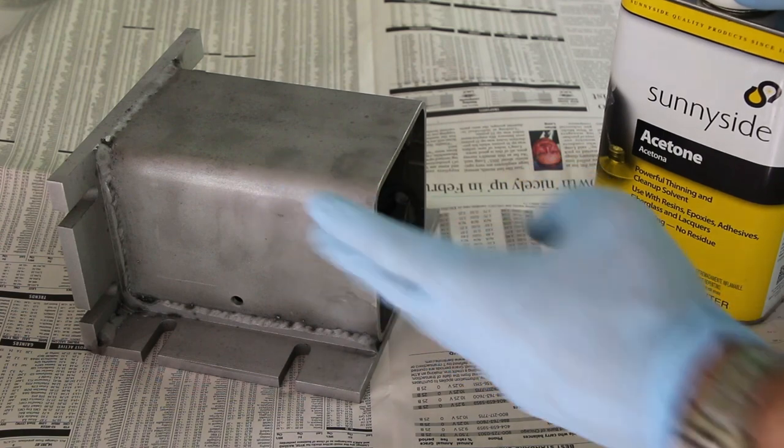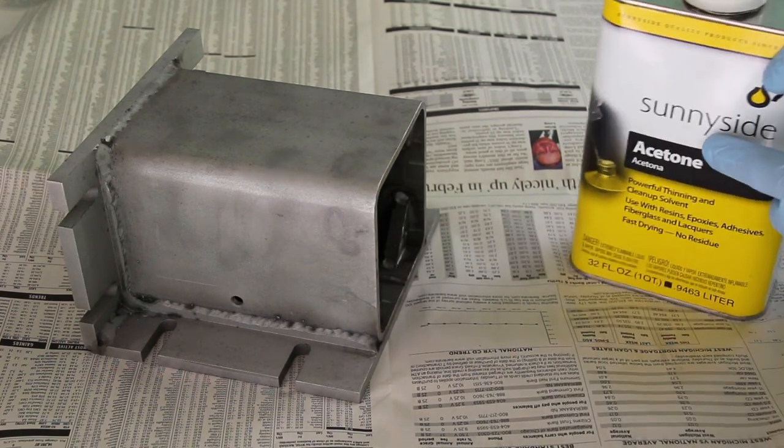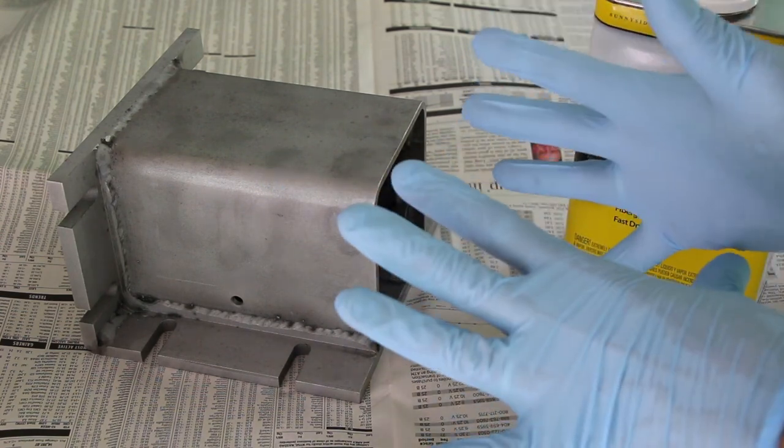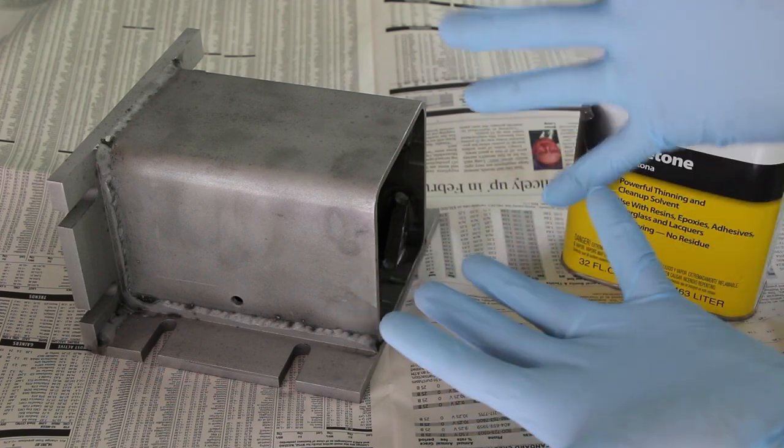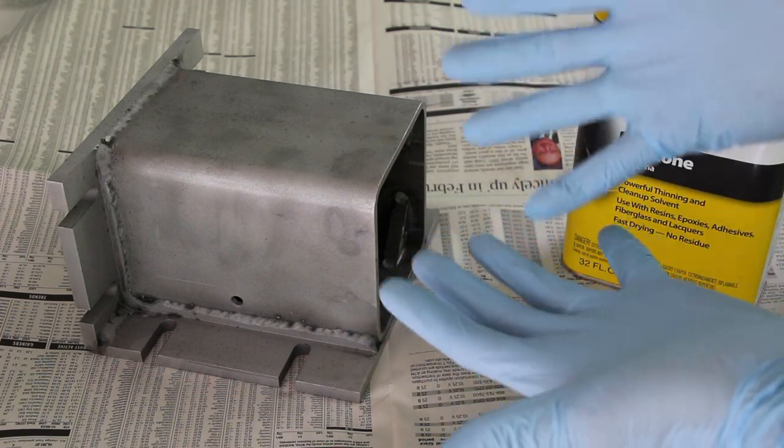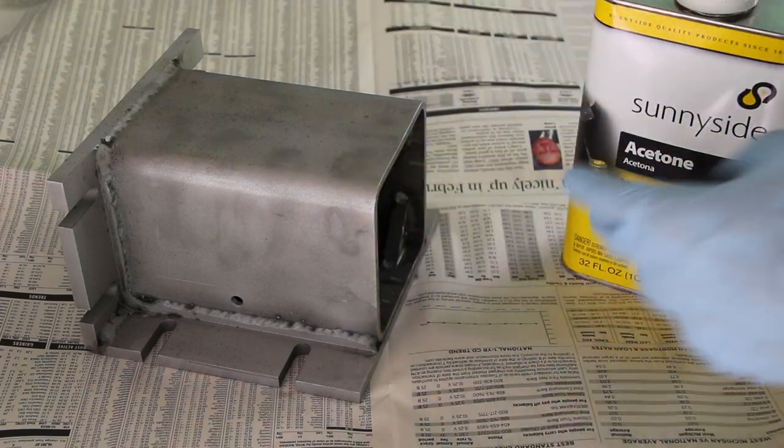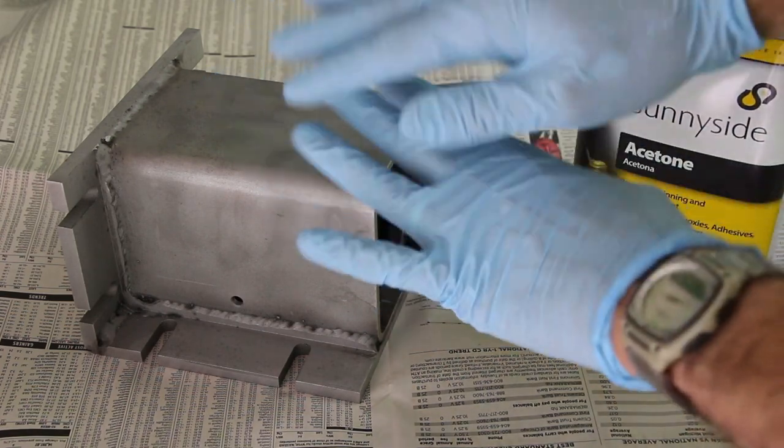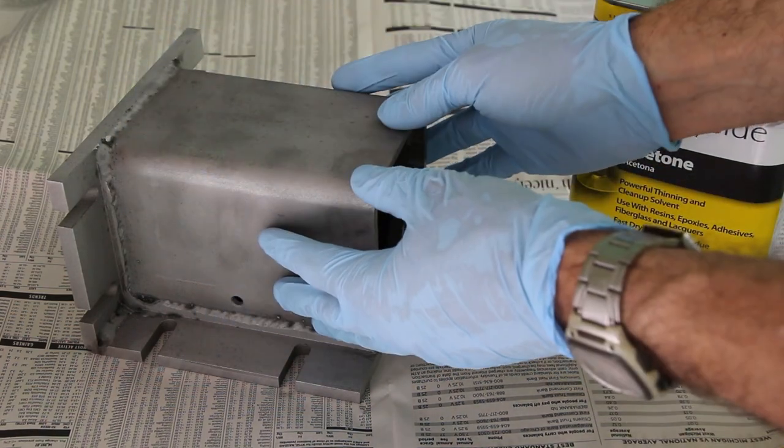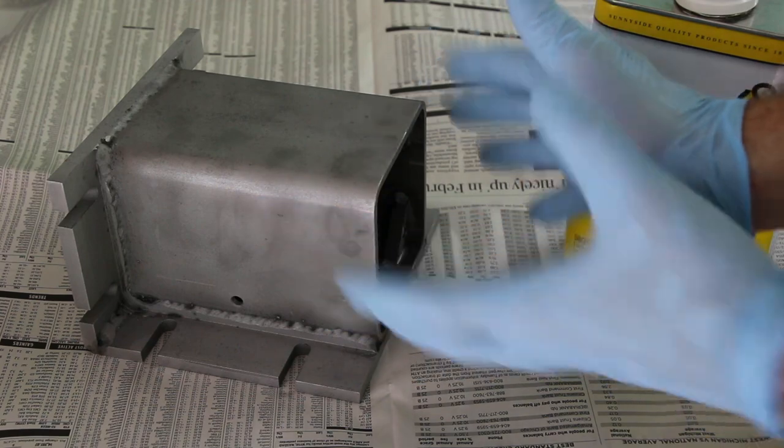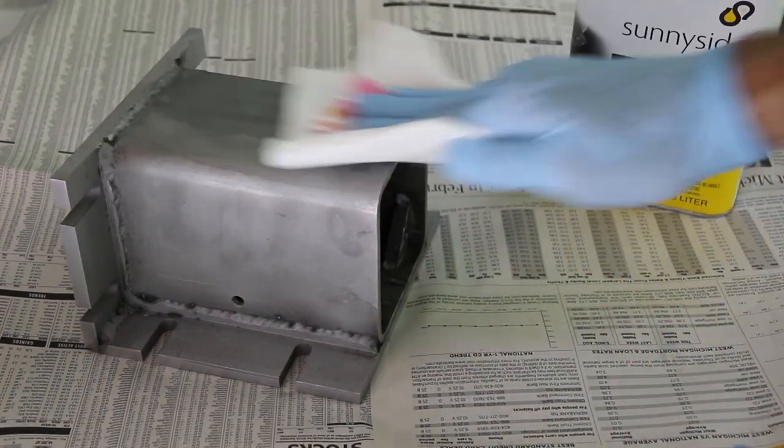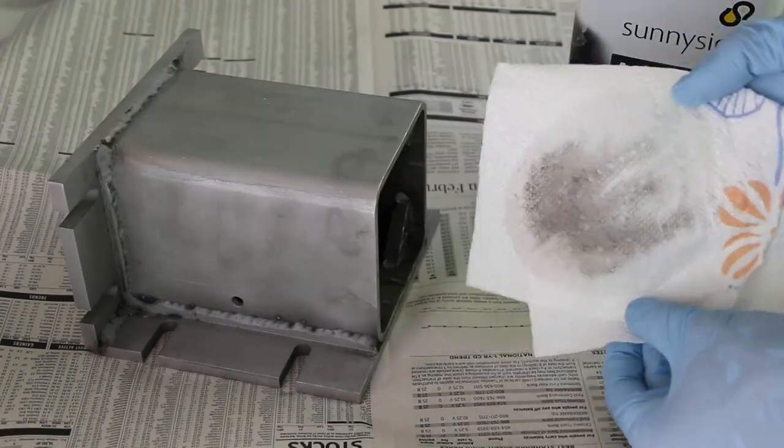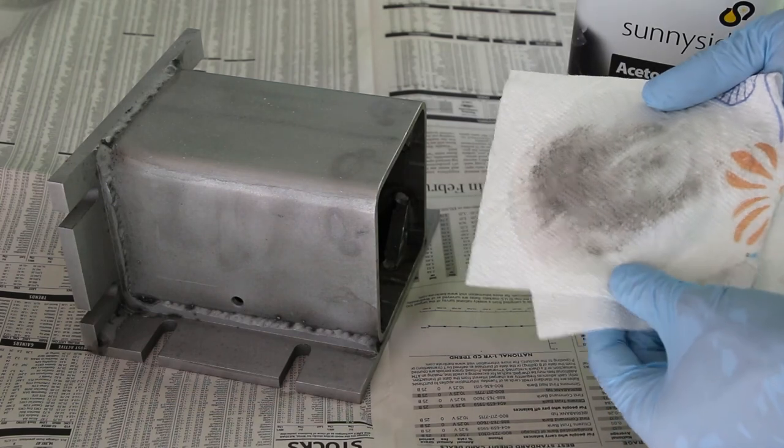Next I'm going to clean the part, not just of sand but especially of oil, so I'm going to use acetone for that. From this point forward I'm going to handle the part only with gloves—these are powder-free nitrile gloves—so they'll protect my hands but they'll also keep any skin oils from getting on the part because I want it clean, clean, clean from now on.